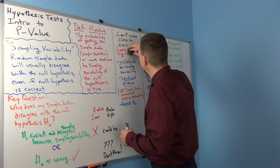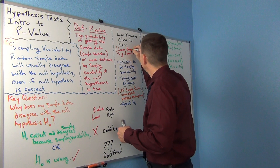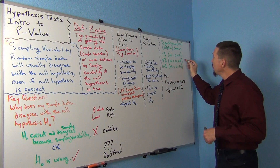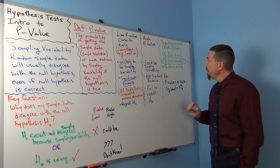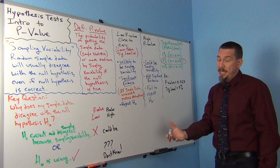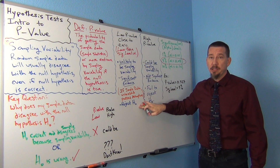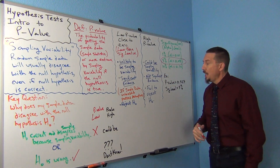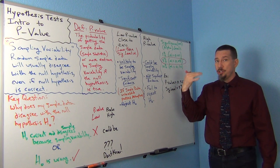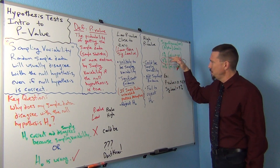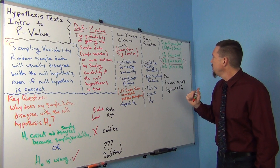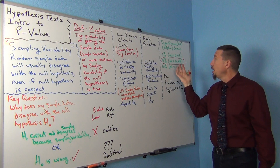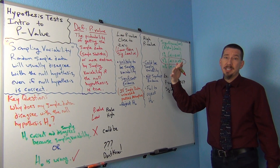In hypothesis testing, we compare the test statistic to the critical value, and we compare the p-value to the significance level. The p-value has to be lower than the significance level. So how low does the p-value have to be? Lower than the significance level, or alpha level. If my significance level is 5% — the most common one — then I want my p-value to be lower than 5% to make it unlikely to be sampling variability and to reject the null hypothesis. If it's higher than 5%, the p-value is considered too high, it could be sampling variability, and we fail to reject the null.